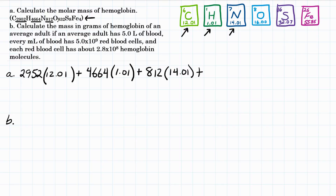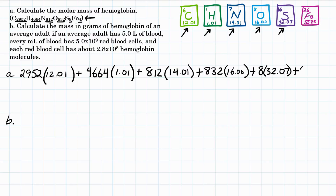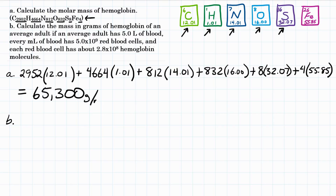Plus oxygen, 832 atoms, times 16. Plus sulfur, which has 8 atoms, and sulfur's molar mass is 32.07. And finally, iron has 4 atoms per molecule, and has a molar mass of 55.85 grams per mole. If we multiply those and add them all together for each element, we get the molar mass of hemoglobin is around 65,332.24, which we'll round to 65,300 grams per mole.